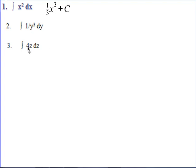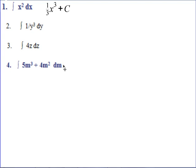Here's a constant times a function — don't forget you can pull the constant outside the integral. Please evaluate that one. This time you have two functions being added together, so just take the integral of each one separately, then add on a single constant of integration after those two. All answers on the worksheet, please.